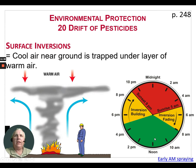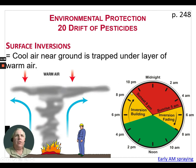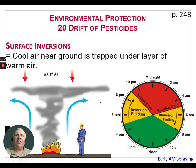Inversions involve cool air near the ground trapped under a warm layer. Looking at this clock diagram, inversions can build later in the evening as the sun goes down, persist overnight, and then remain in the morning until the sun heats the soil again. If it's foggy in the morning when you go out, park the sprayer — don't try to spray. Inversions can cause a lot of damage through pesticide drift.